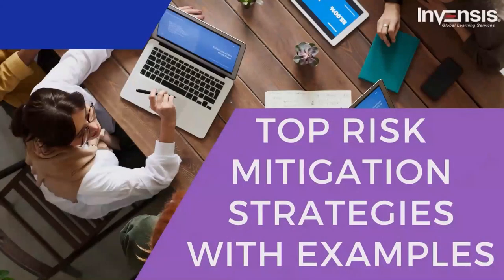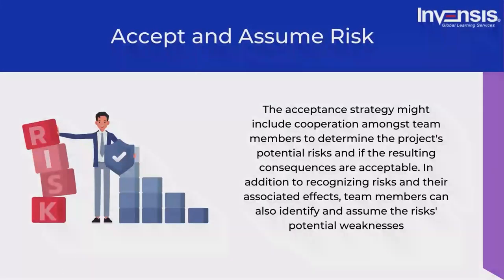The top risk mitigation strategies involve determining potential risks to a project such as team issues, revenue loss, product failure, and scope creep, then implementing strategies to reduce or eliminate the risk. In risk mitigation planning and monitoring, the first method is to accept and assume risk.